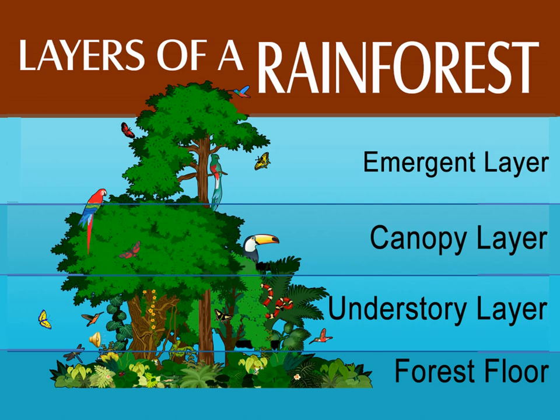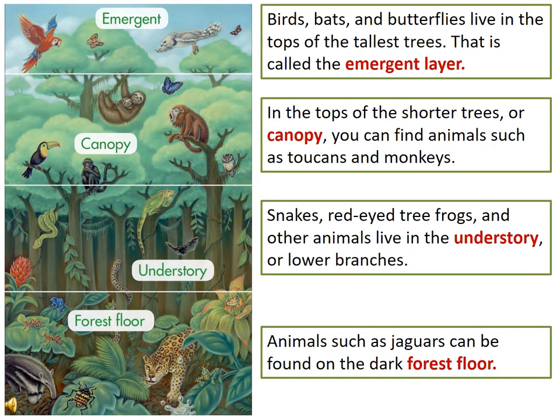The layer below the canopy is called the understory. And the last layer is the forest floor, where only a few plants grow because it is dark. Here again are the four layers of the rainforest — notice the variety of animals you see. Which layer does your favorite animal live in?